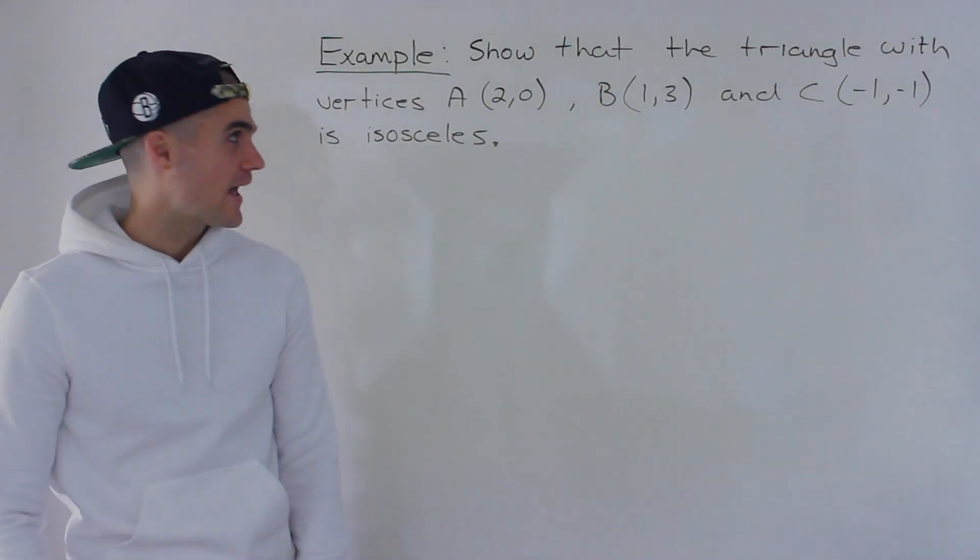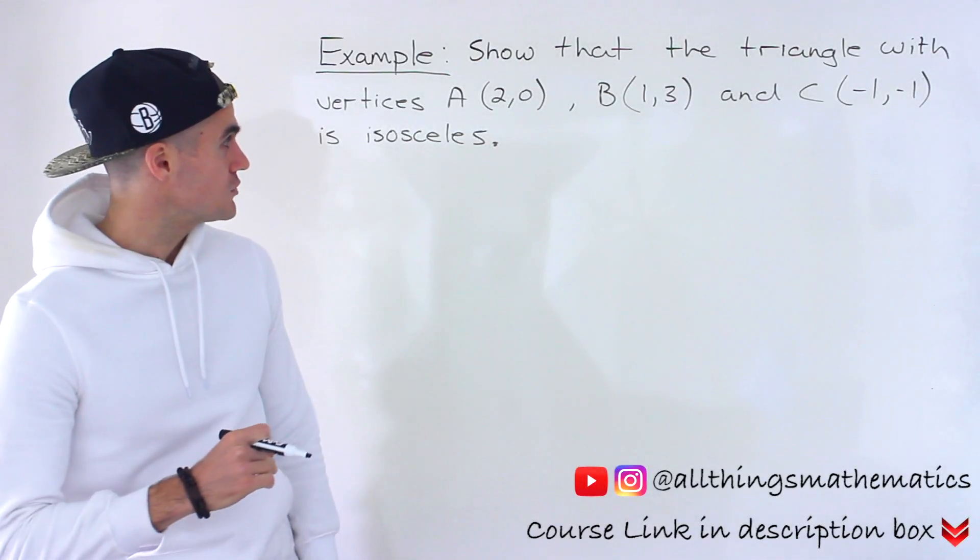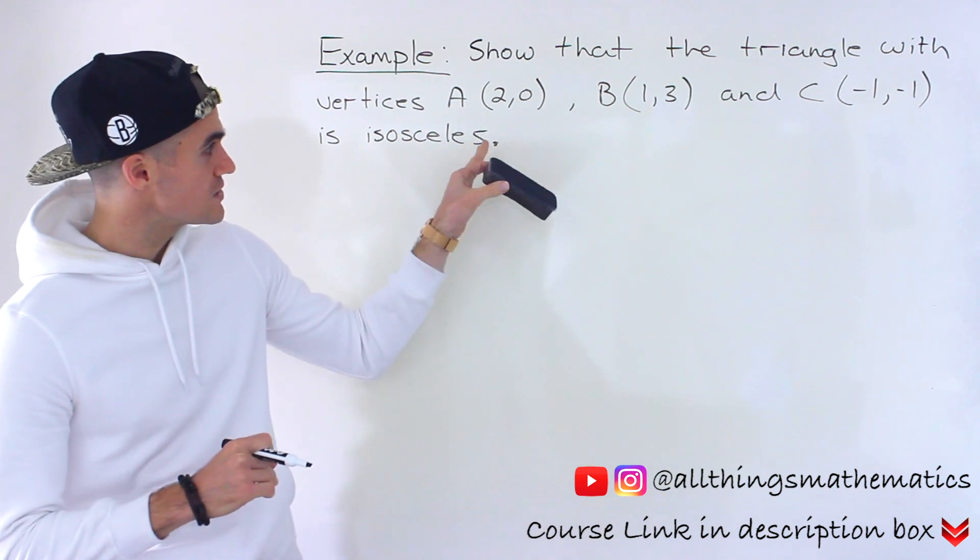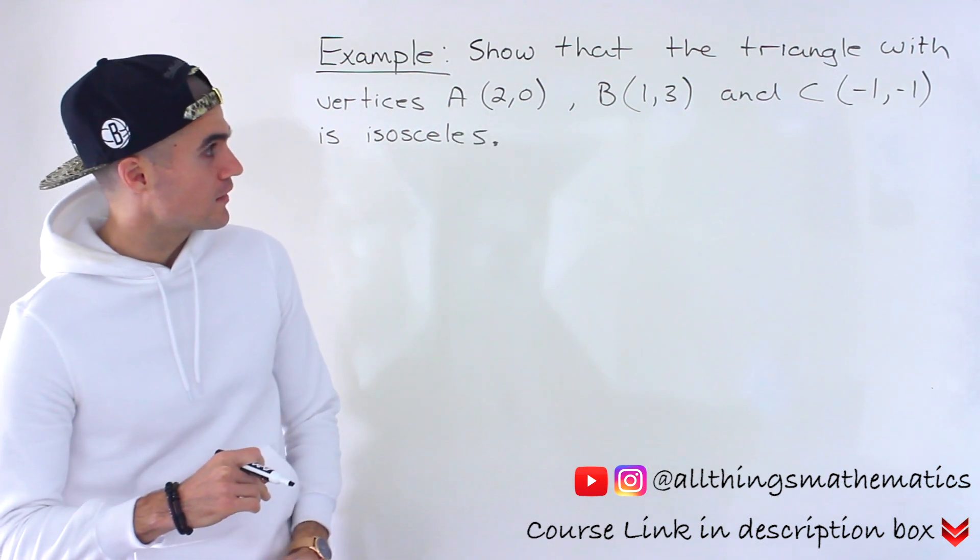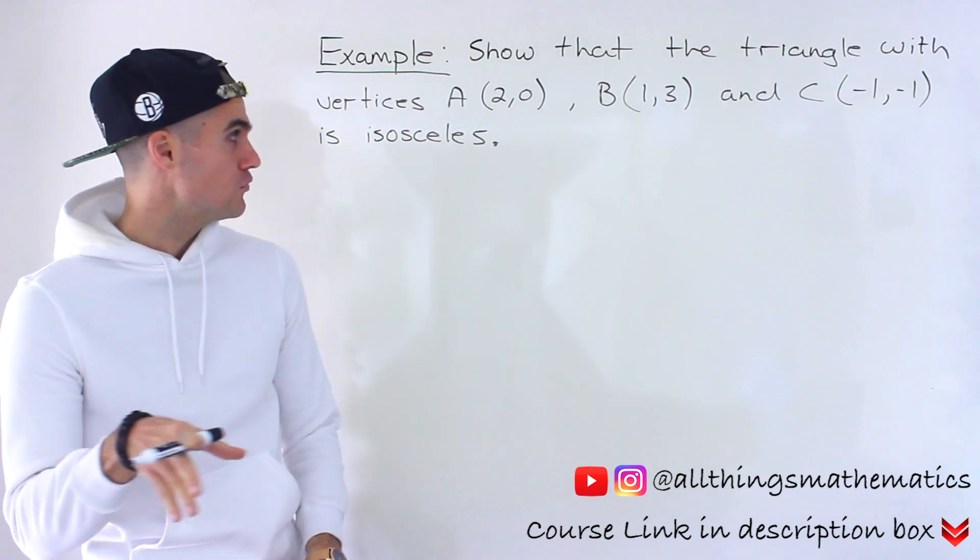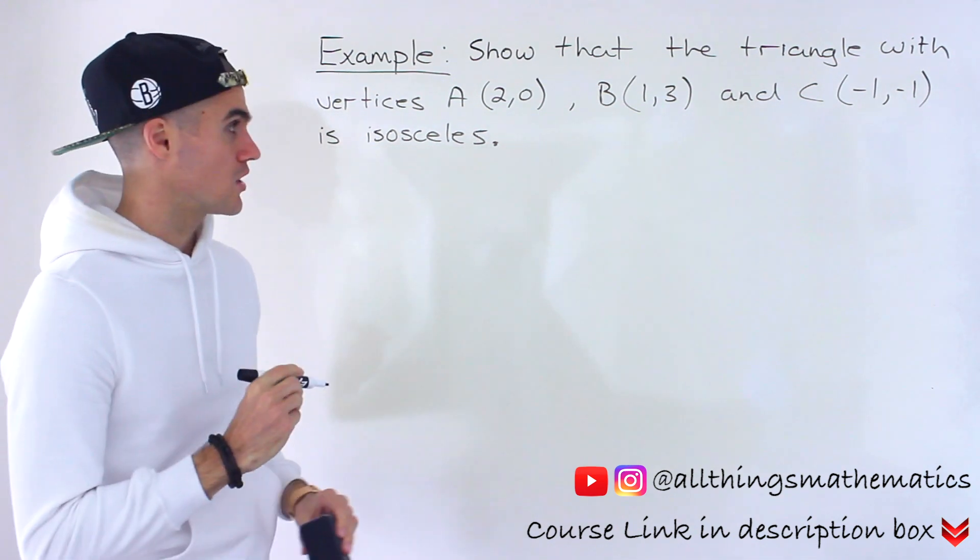Welcome back everyone. Patrick here and moving on to the next question. We have to show that the triangle with these vertices A(2,0), B(1,3), and C(-1,-1) is an isosceles triangle.